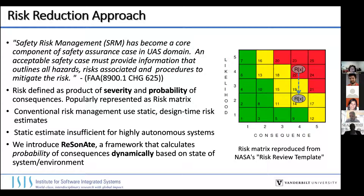Safety risk management is a pretty common approach in the safety assurance of several domains. It's necessary to show, when you're trying to demonstrate that an autonomous system is safe, that you've identified the hazards, the risk from those hazards, and you've put control measures and mitigations in place to reduce those risks down to an acceptable level. Typically a risk matrix approach is common, where you define risk as a product of severity and probability. Conventional techniques use static design-time risk estimates.